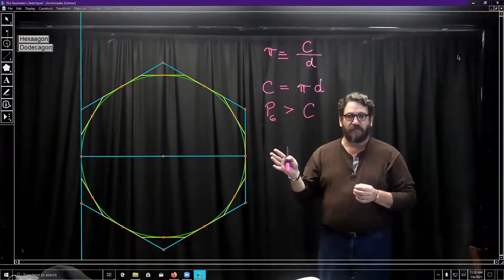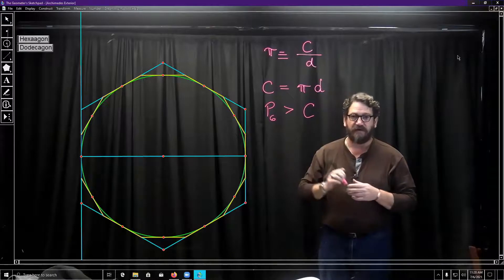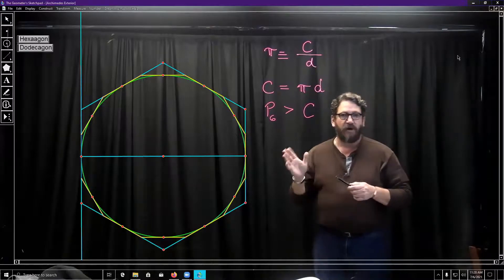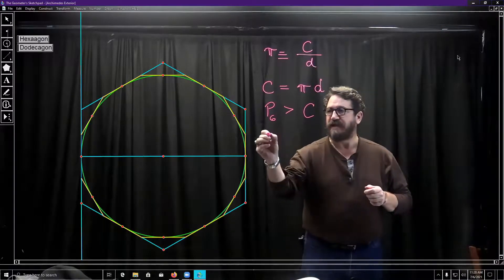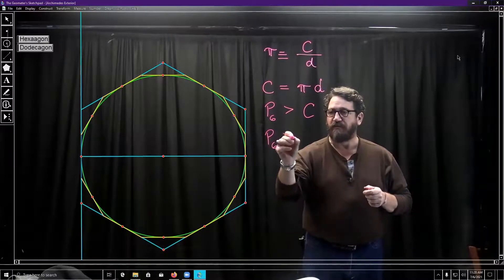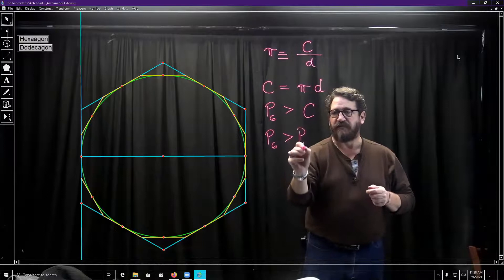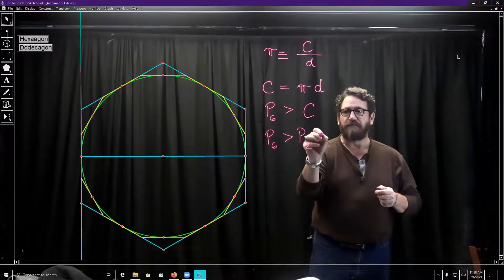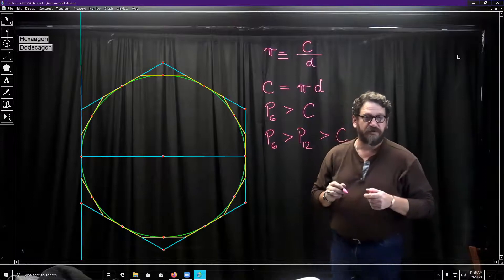And we now have it. We have the dodecagon, the 12-sided figure. And what we're now able to say is that the polygon of six sides has a greater perimeter than the polygon of 12 sides, which must be more than the circumference of the circle.